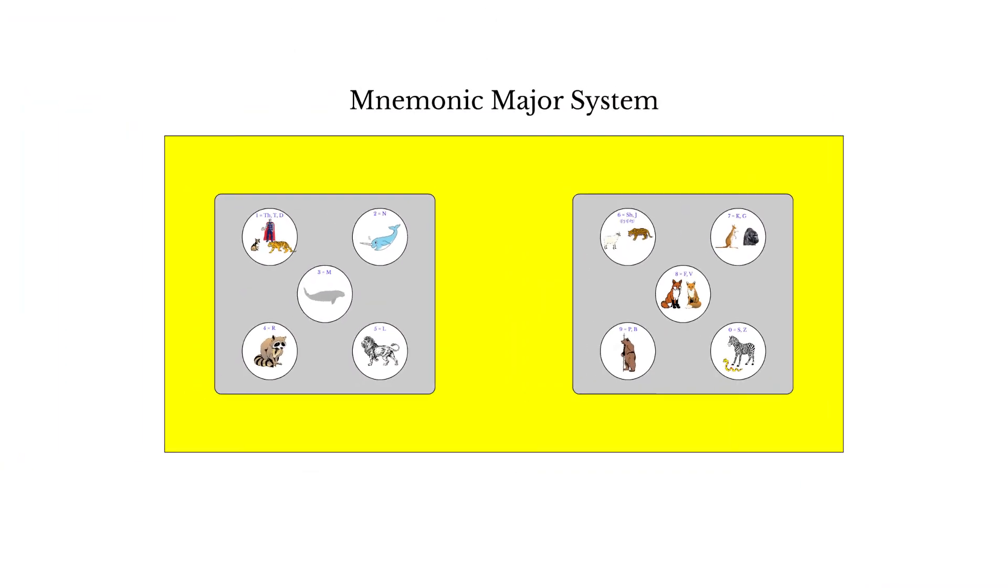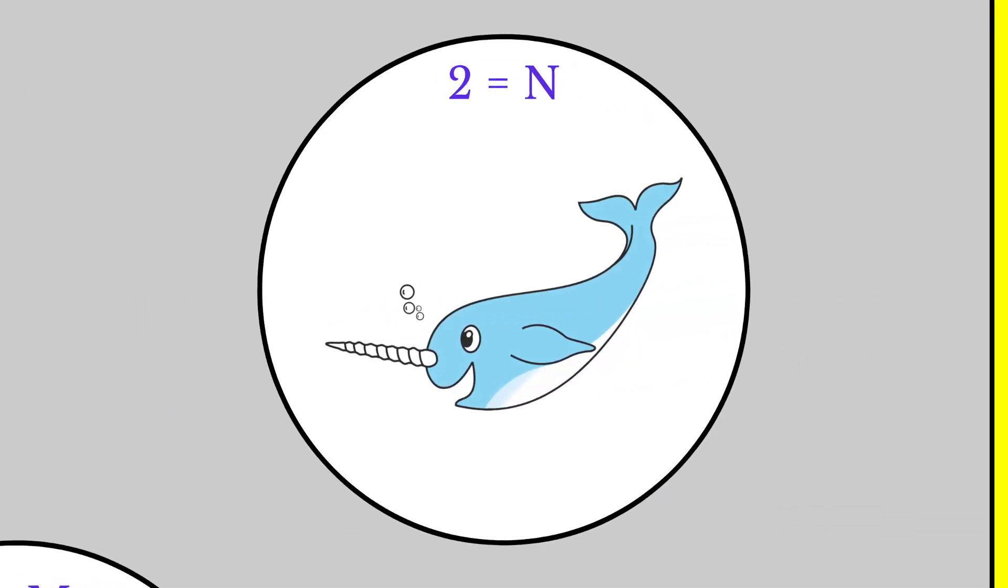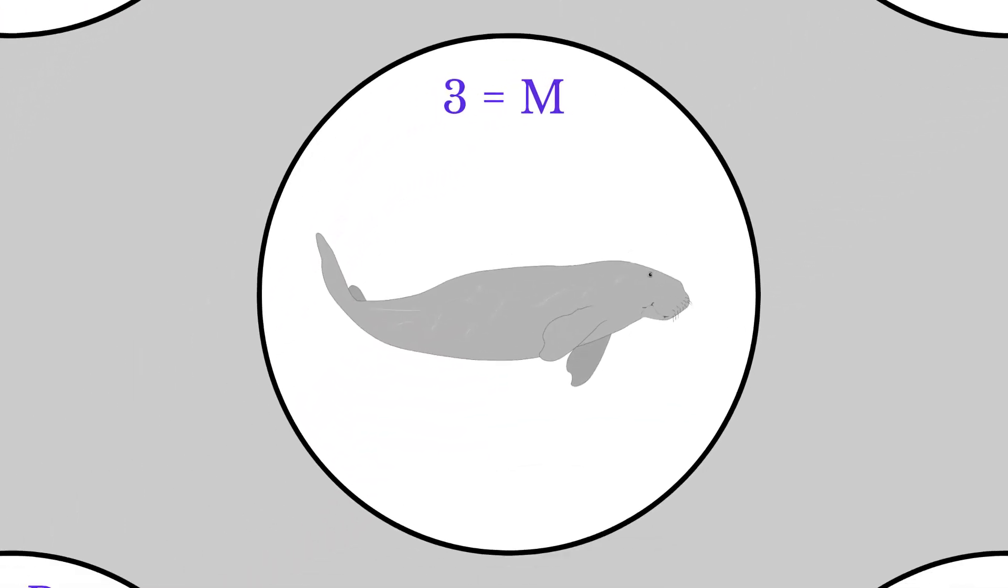Now let's connect these images with a story to remember the system as a whole. If Thor had a pet, it wouldn't be a dog, but rather a tiger. Fun fact about Thor, he once used his hammer to break the tusk of a narwhal, and that's how manatees came into being.